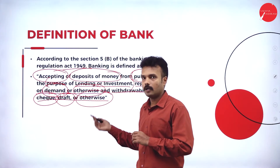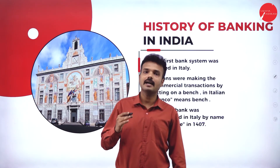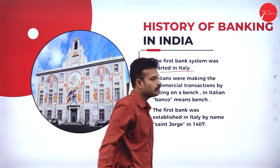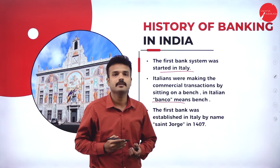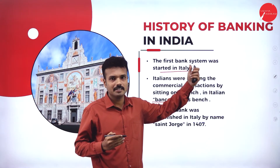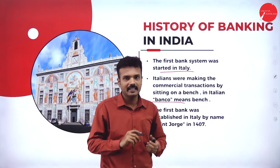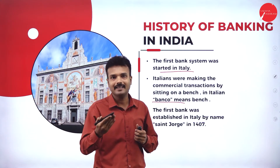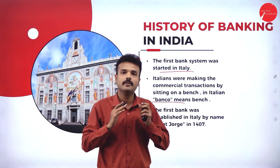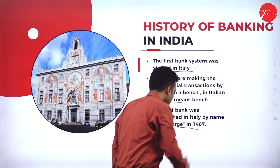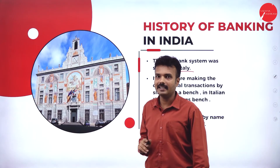The credit of the banking system must go to the Italians, as they introduced the banking system for the first time. The word 'bank' is derived from the Italian word 'Banco,' meaning the table where financial transactions happened. The first bank in the world was started in Italy — the Bank of St. George — established in 1407. This is a picture of St. George, located in Italy.